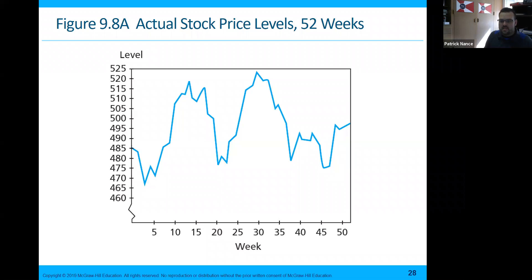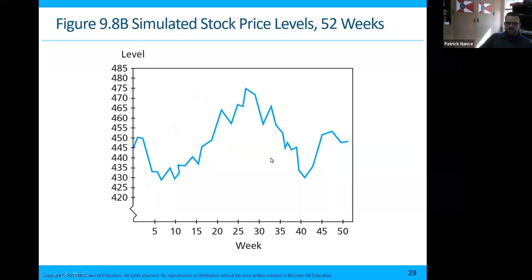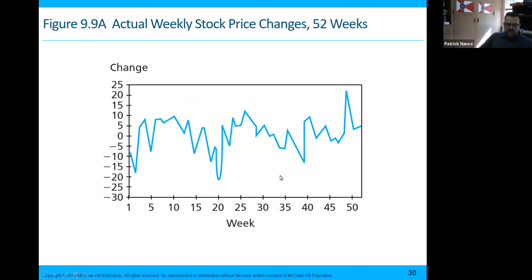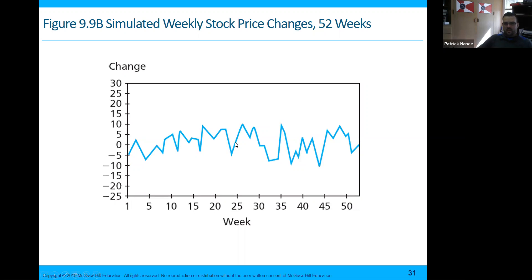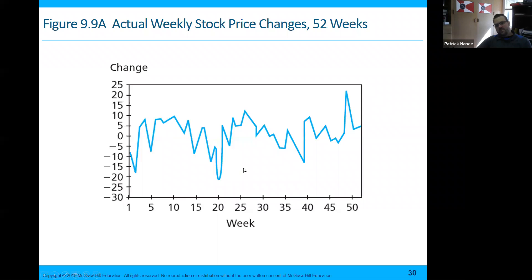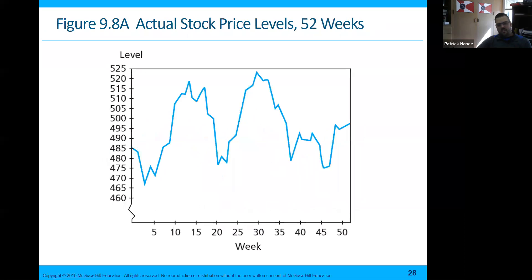The actual level of stock prices over a 52-week period varies quite a bit — from $4.85 to $4.525 with some large peaks and valleys. This is a simulated stock price showing price levels over 52 weeks, and overconfidence probably led to the larger swings seen on the prior chart. You can compare the actual stock price changes for 52 weeks against a simulated weekly stock price change — they're similar but not exactly the same.